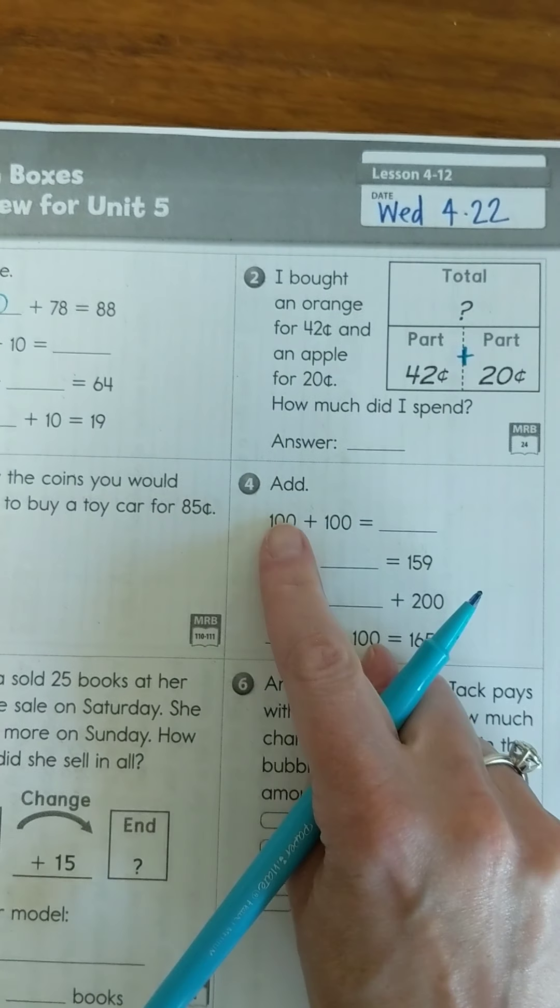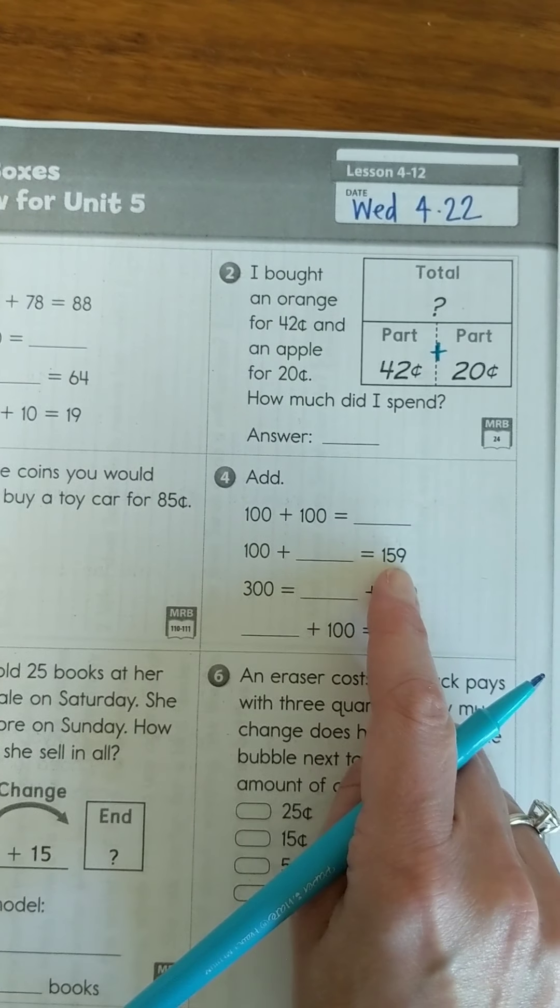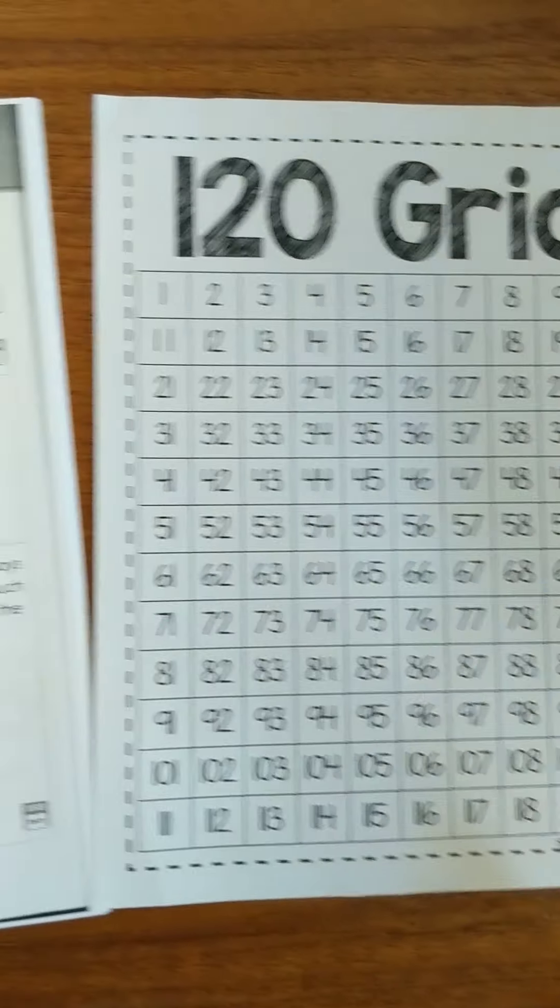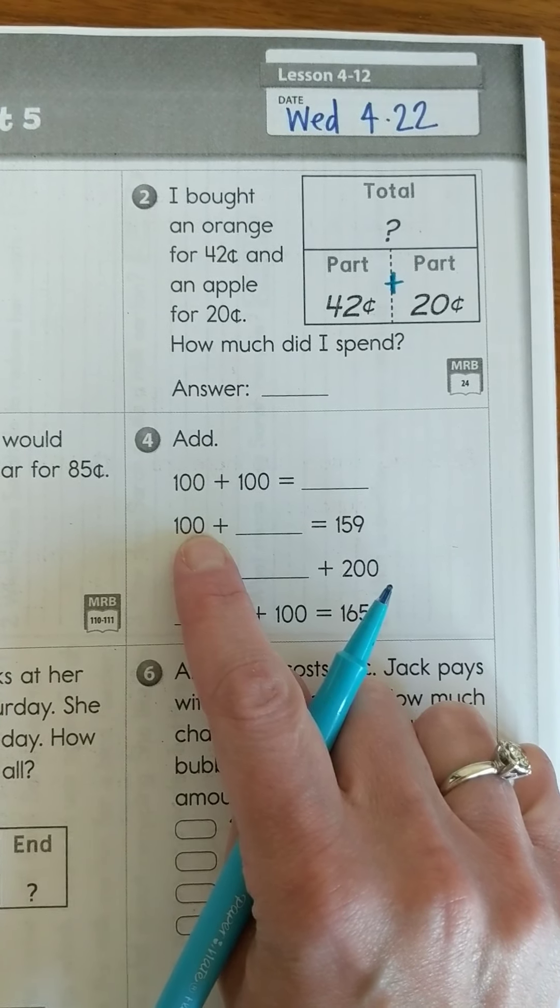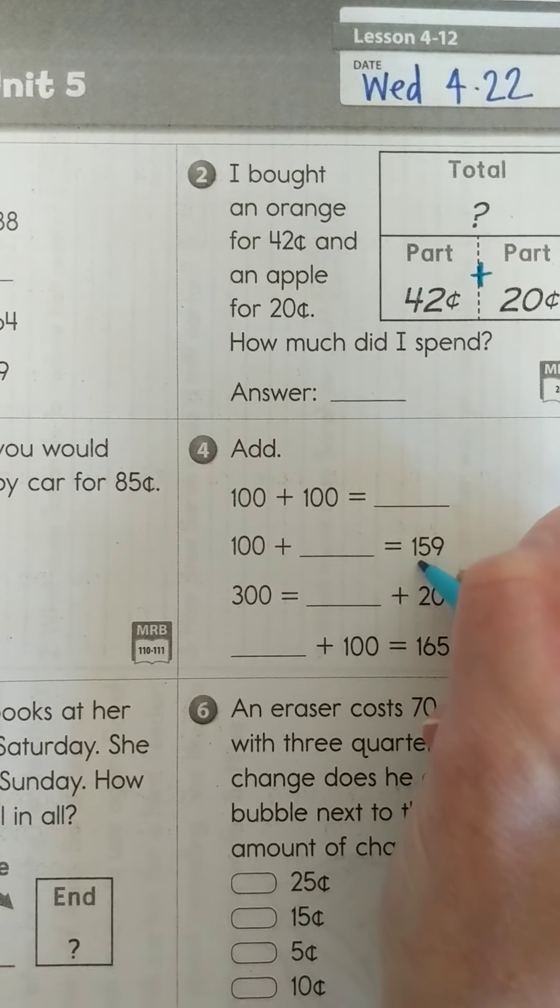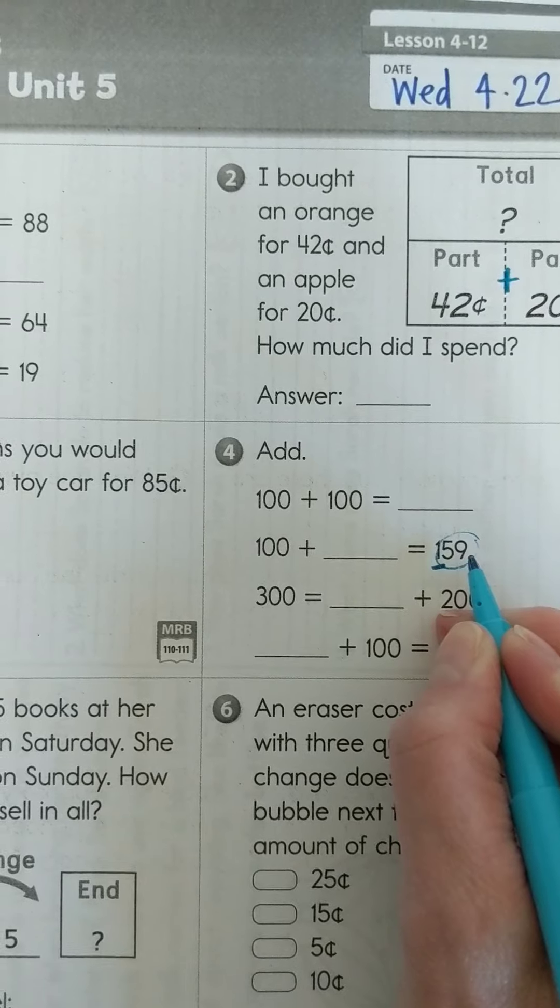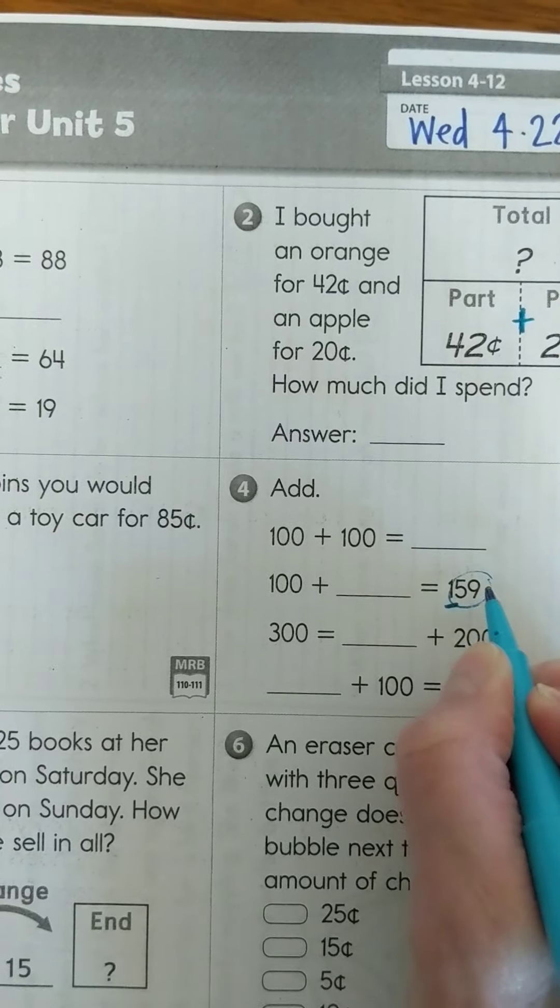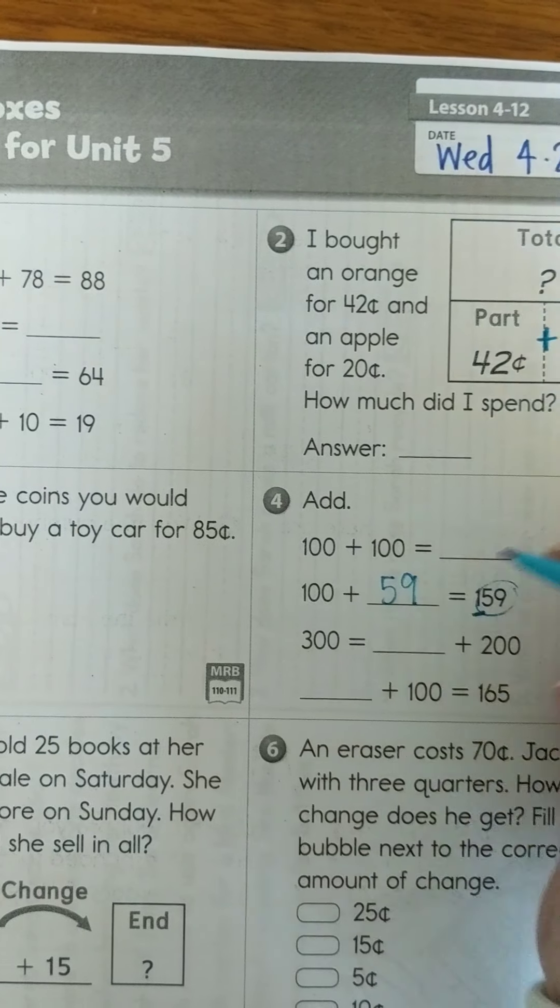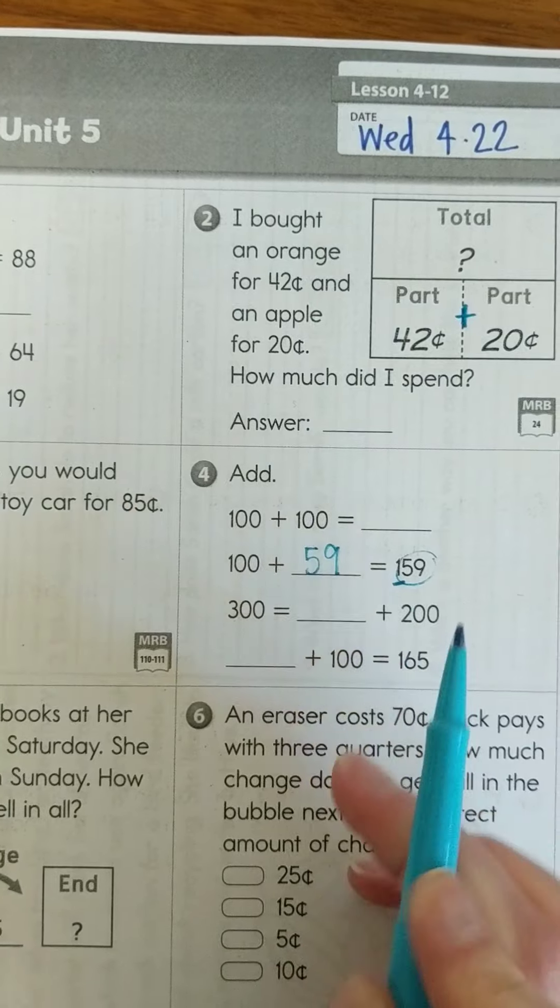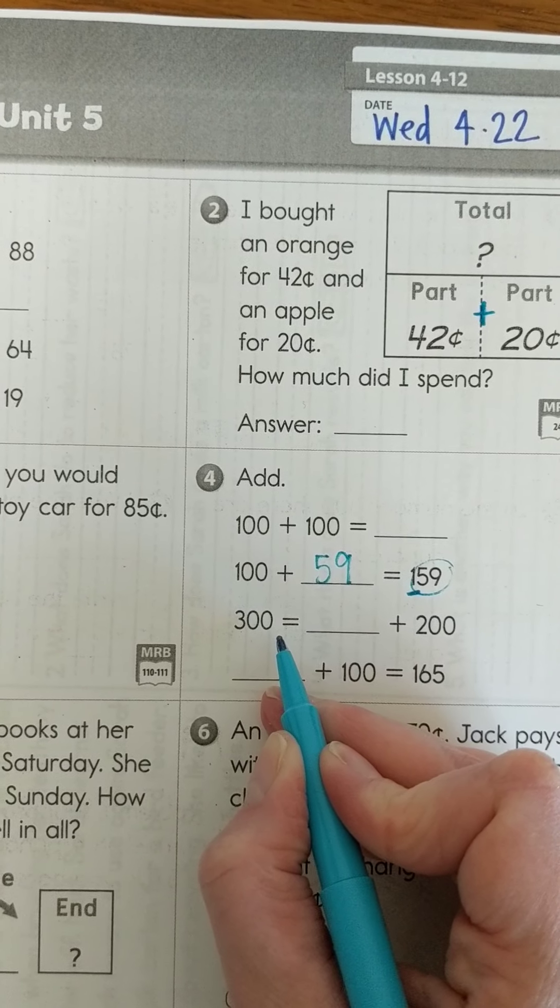Now we're going to add some numbers. We have 100 plus 100, I think you can figure that out. Now we have 100 plus something is going to give us 159. Our number grid only goes up to 120 so this isn't going to help us here. We need to think, I had 100, I had no tens and no ones. When I look over here I still have my hundred but now I have a five in the tens place and a nine in the ones place. I still have that hundred I had before but this five in the tens place and the nine in the ones place was added, so I know that I had to add fifty-nine to get myself from 100 up to 159. Now this is kind of one of our backwards ones - we have a missing number, something plus 200 is going to give us 300.